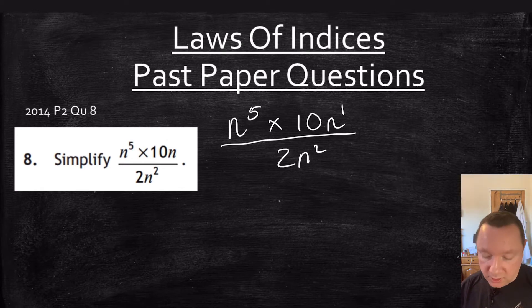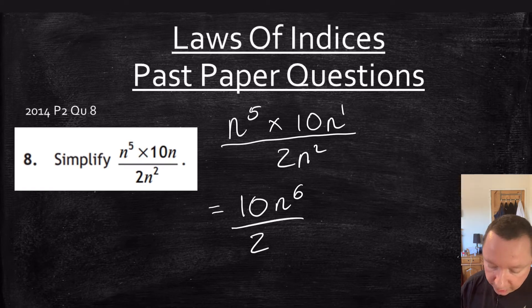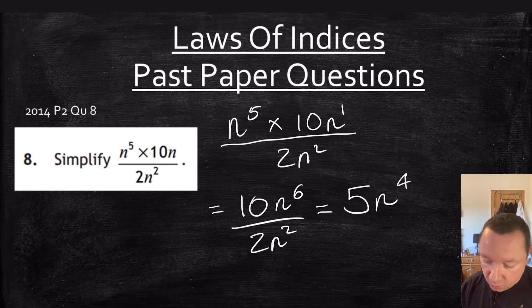Let's just deal with the top and bottom separately. Doing the top we've got 10n to the 6, add the powers, over 2n squared. 10 divided by 2 is 5n, and I can take away the powers now: 6 minus 2 is 4.